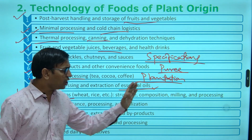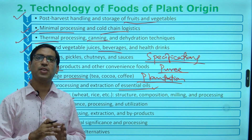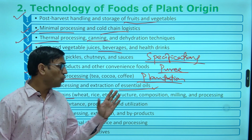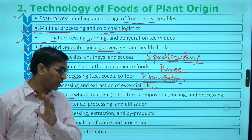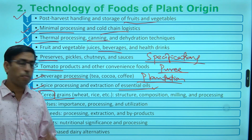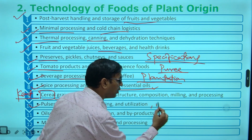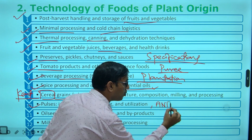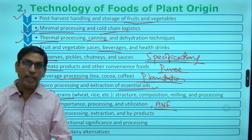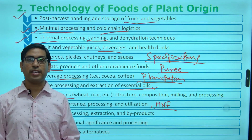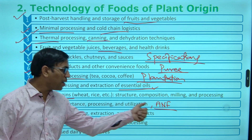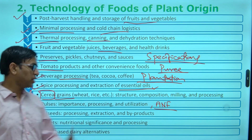Cereal structure, composition, milling process — the CFT Ram milling process and whole processes are there. Then pulses — importance of pulses, processing, utilization — and most importantly, what are the associated anti-nutritional factors, and what are the methods by which we can eliminate those anti-nutritional factors.